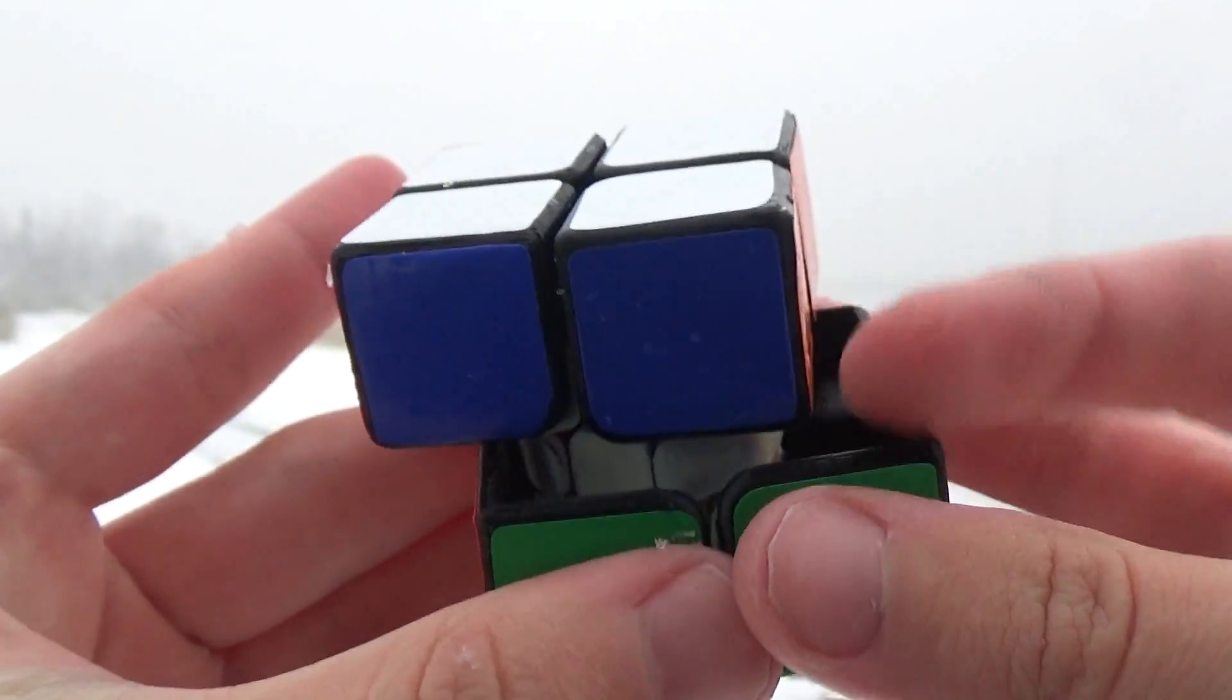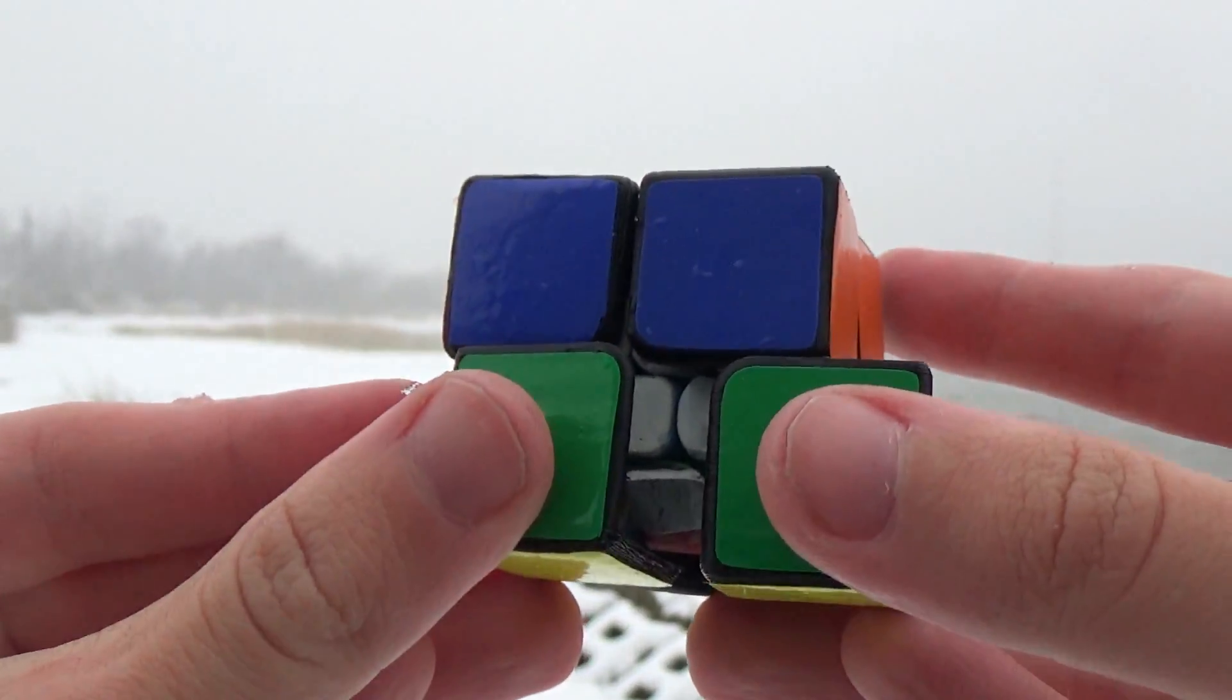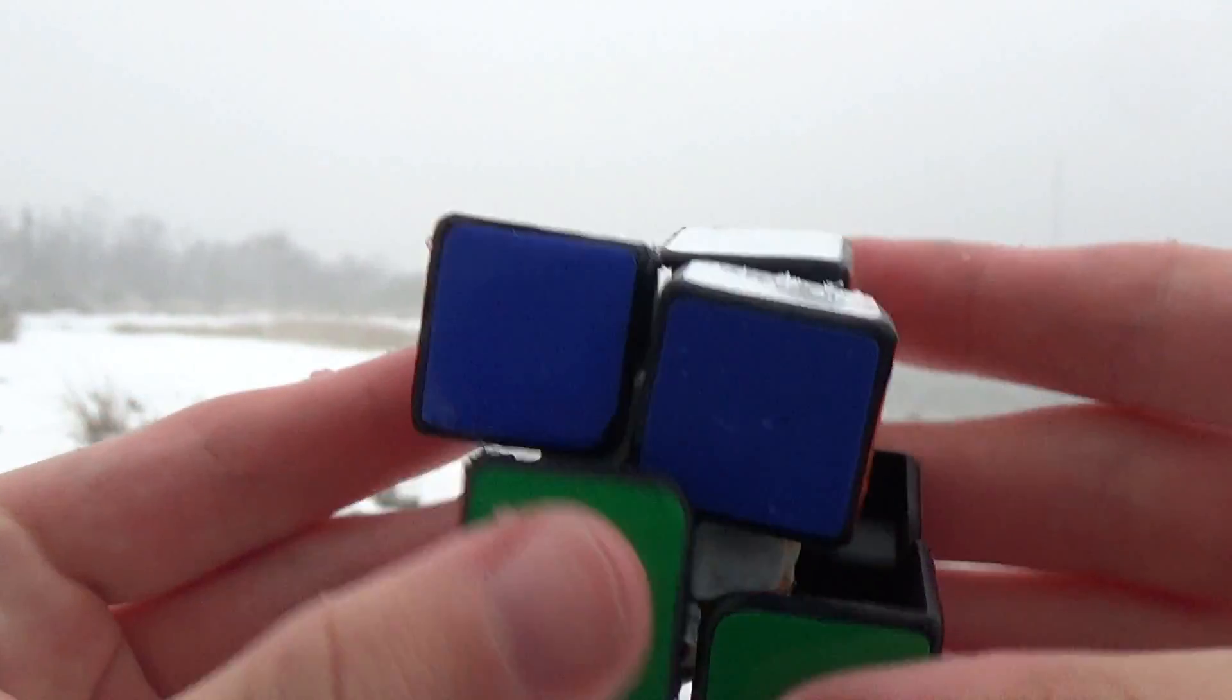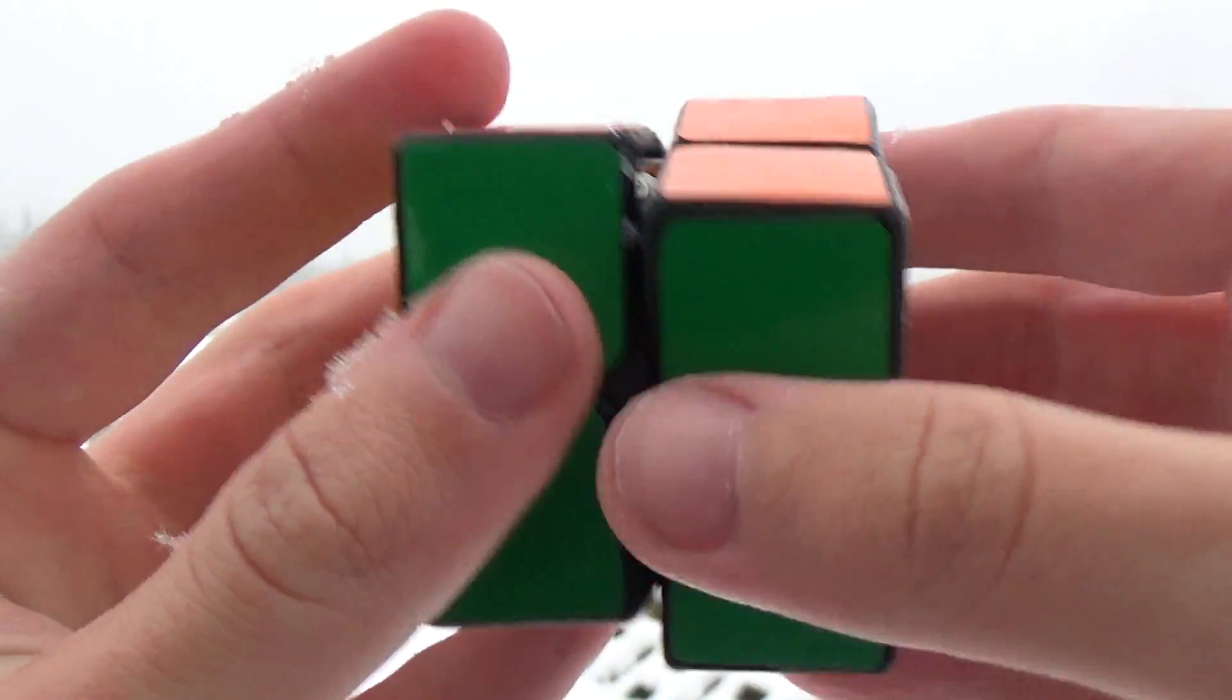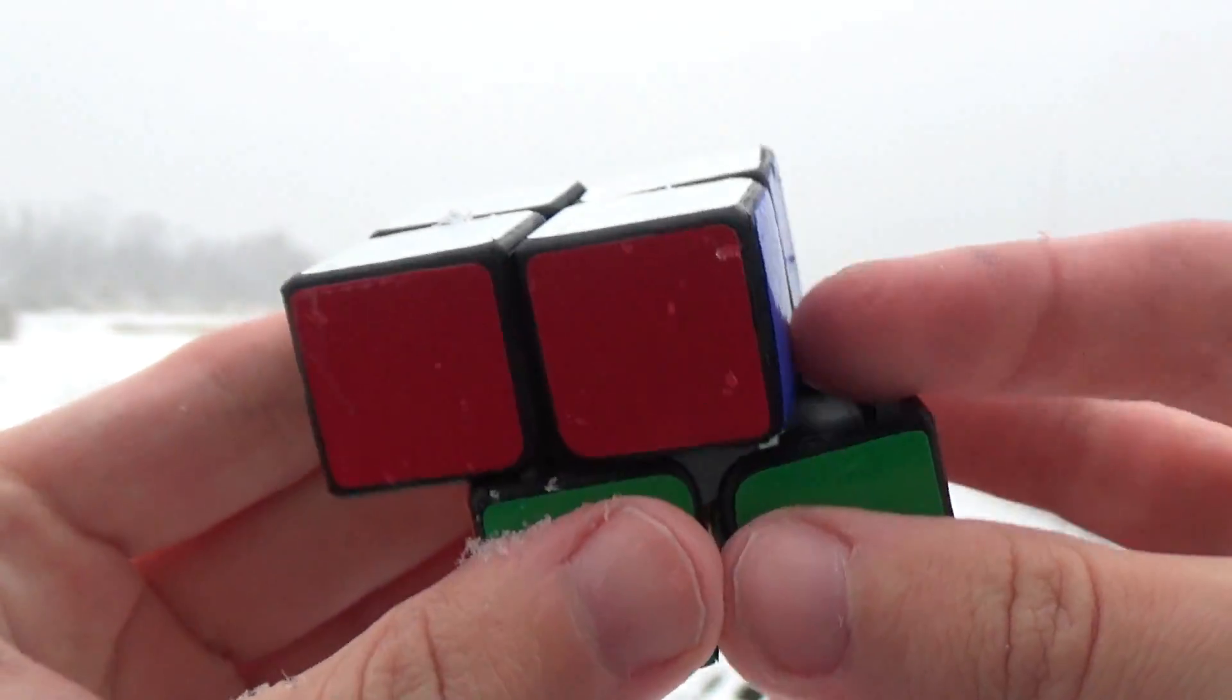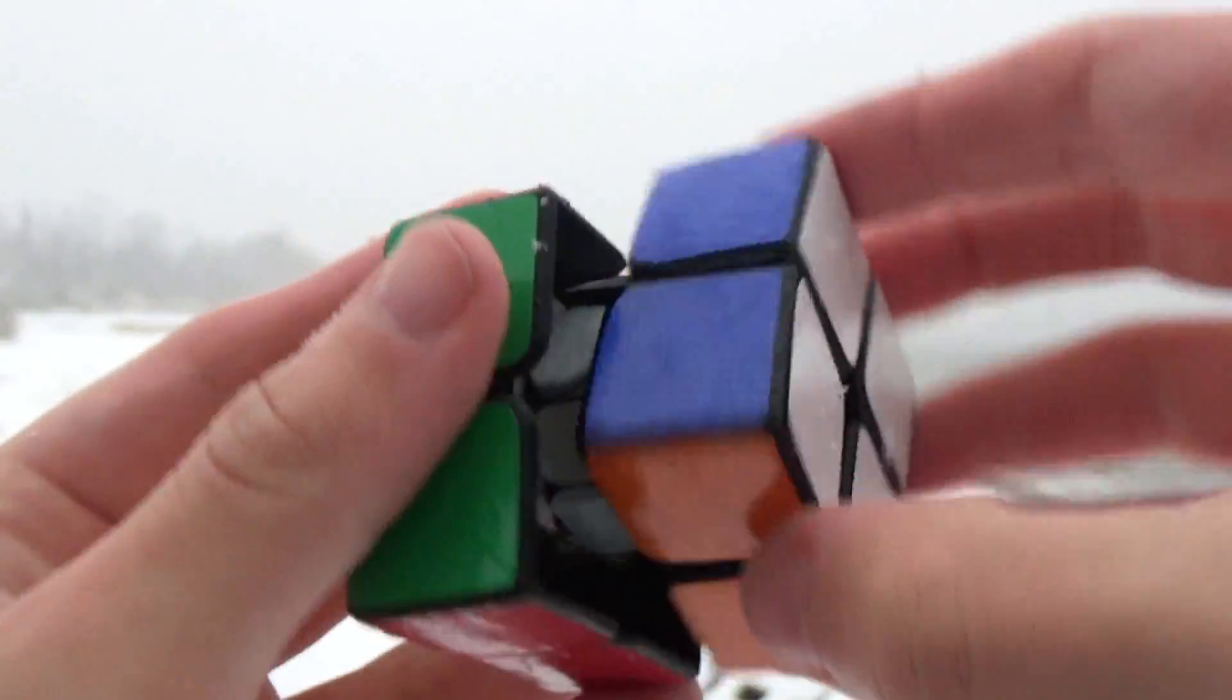The first version, which I'm turning here, wasn't internally bandaged, which resulted in the middle layer messing up turns. I later fixed this issue, and the second version that I sent to DG Cubes in December turned perfectly fine.